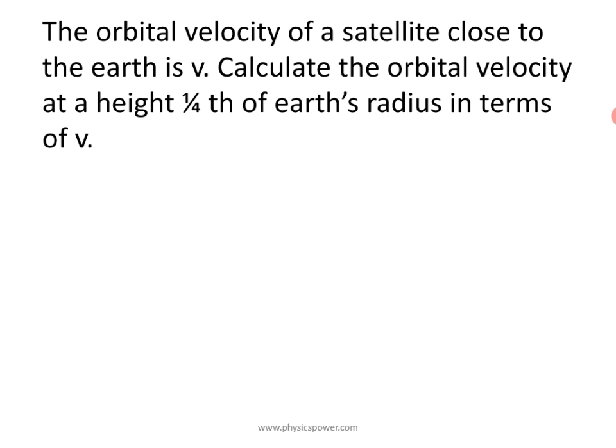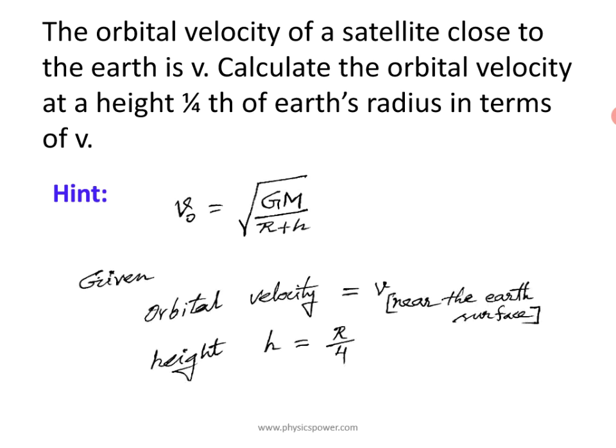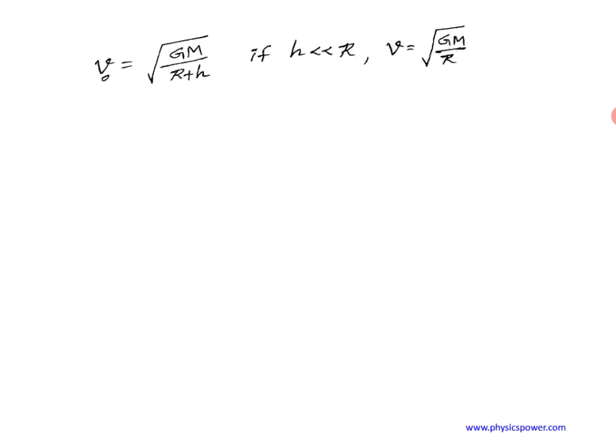Try to solve by pausing the video. The hint is the orbital velocity formula. Now, for the given data: orbital velocity near the earth's surface is V, and height H = R/4. Since the satellite is very close to the surface, H ≈ 0, so V = square root of GM/R.